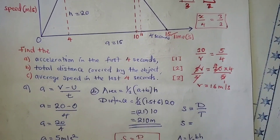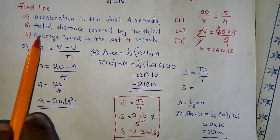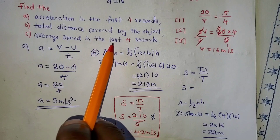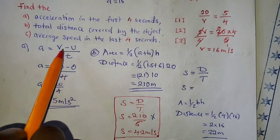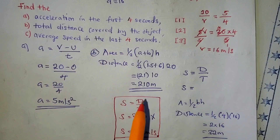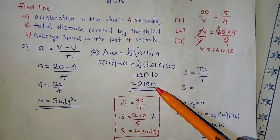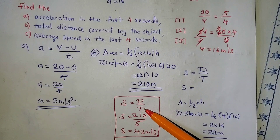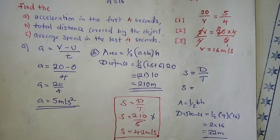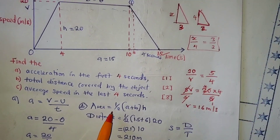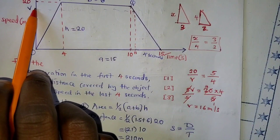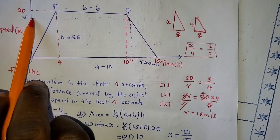Note: if the question had asked for the average speed for the whole journey, it would have been total distance (210 m) divided by total time (15 s). But here they specifically ask for the last four seconds, so we needed to first find the unknown velocity, then the distance, then the speed.